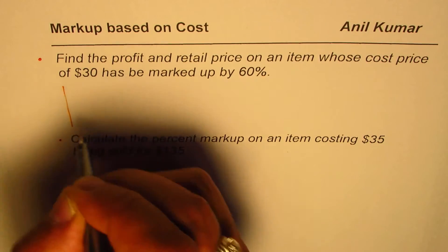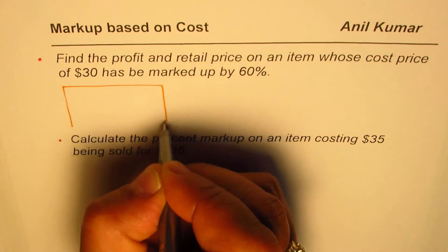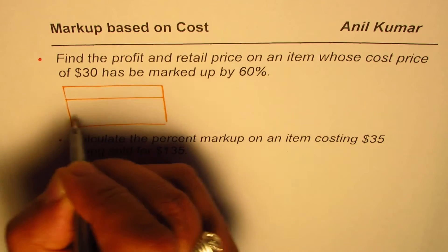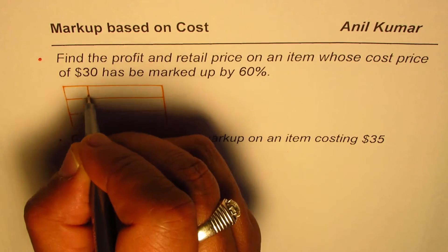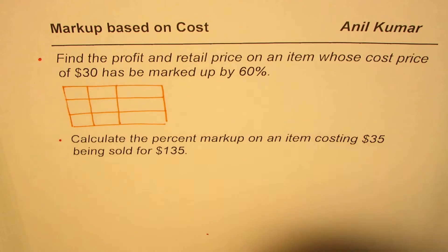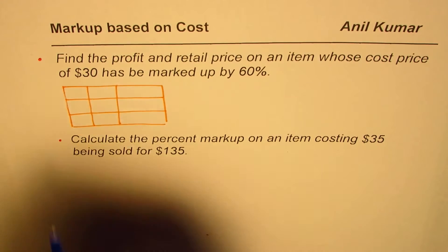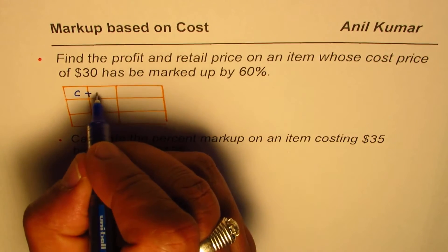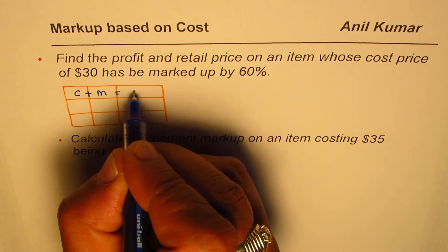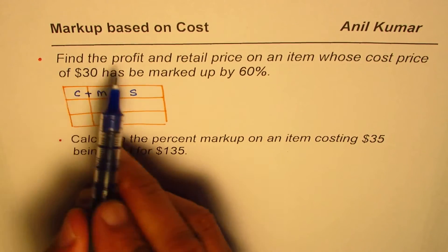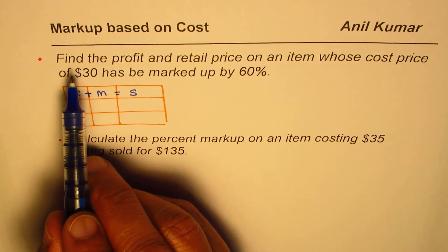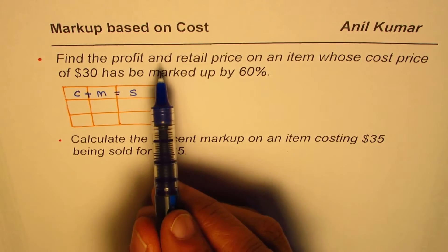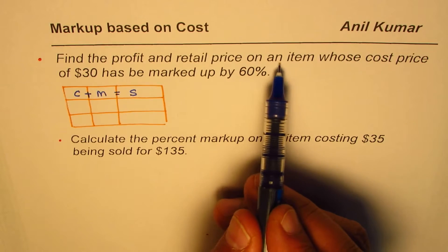Let's look into our table, which is a kind of three by three table. We are using this to solve markup questions and it really helps to explain the concept. We know: cost plus markup equals sales.